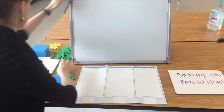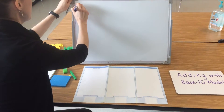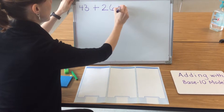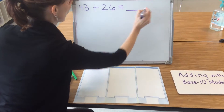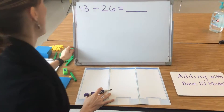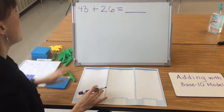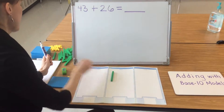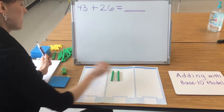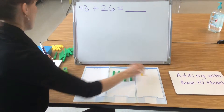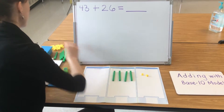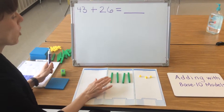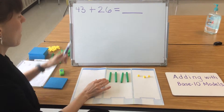We're going to start by solving this problem: 43 plus 26 equals something. The first step for students is to model the number 43. 43 has four 10s and three 1s. After they model the first number, they should always count to make sure they have the correct amount.